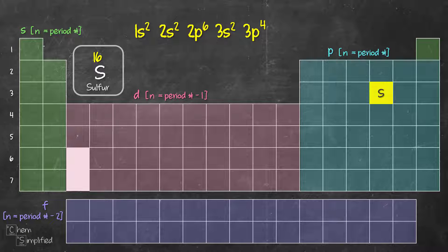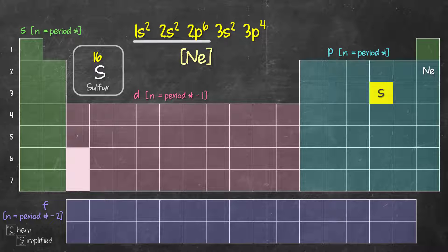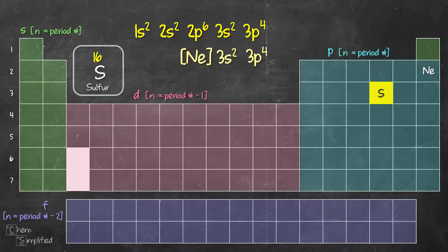For the abbreviated electron configuration, the noble gas in period 2 is neon. Write neon in square brackets — [Ne] covers 1s2, 2s2, 2p6, everything up to period 2. Then continue with what's left in period 3: 3s2, 3p4. That's the abbreviated electron configuration for sulfur.